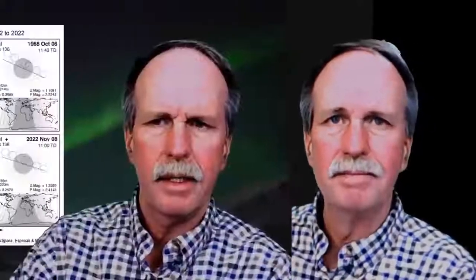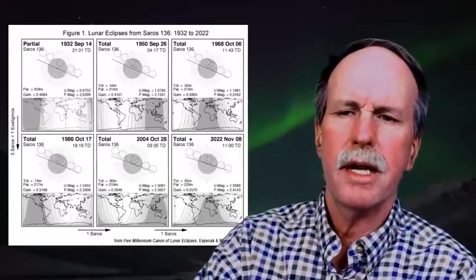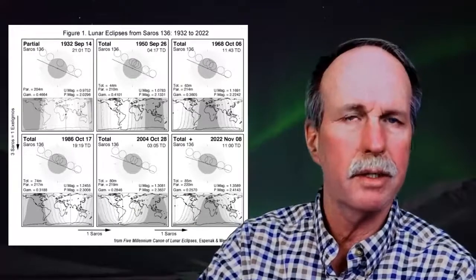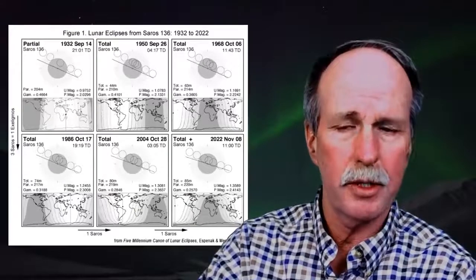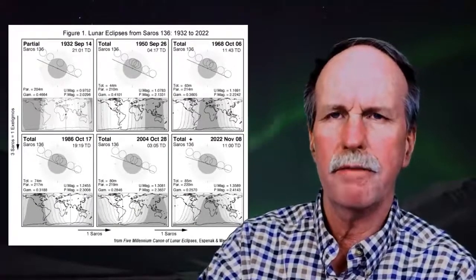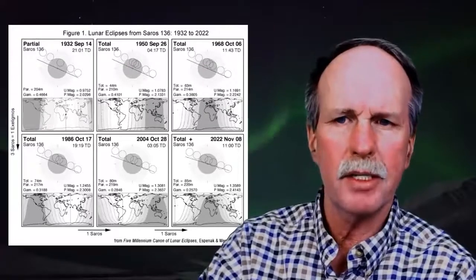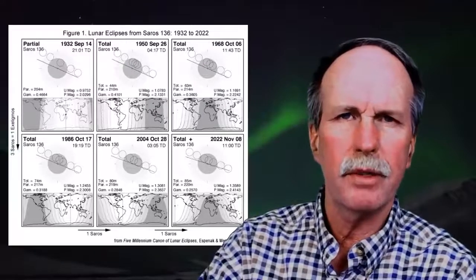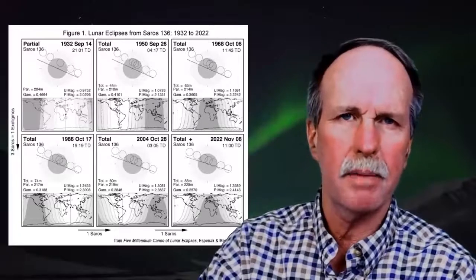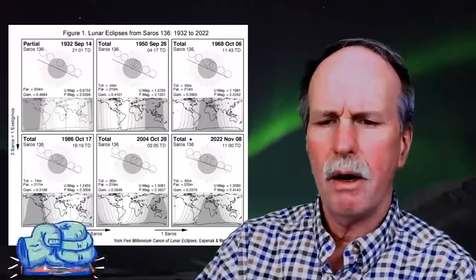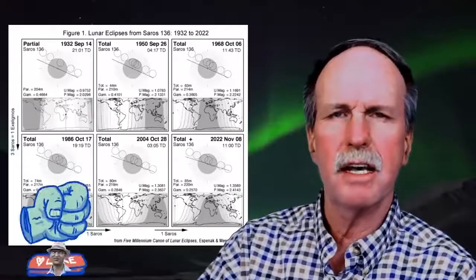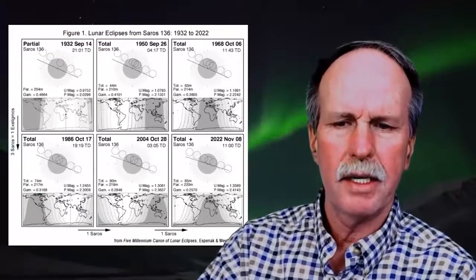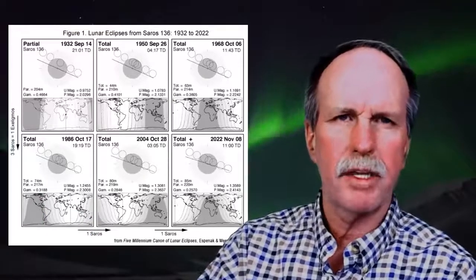In the Saros cycle there are 223 synodic months — new moon to new moon — 235 anomalistic months — perigee to perigee — and 243 draconic months — node to node. All of these add up to 6,585 days and about eight hours, varying from seven hours to almost 13 hours.